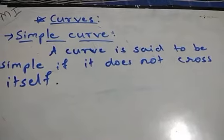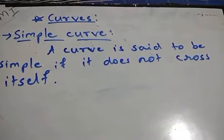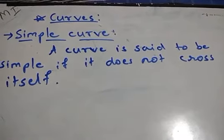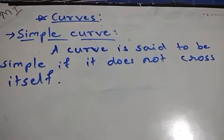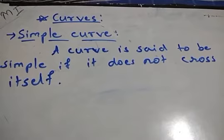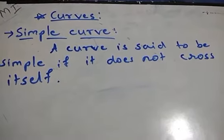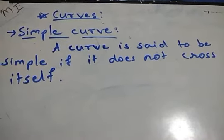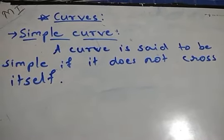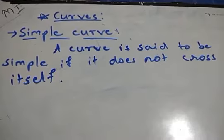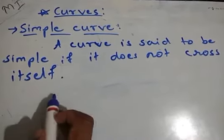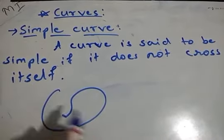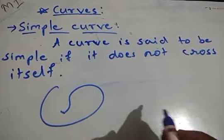Now let's study the next part, that is simple curve. These are the types of curves, and we are going to discuss the first type: simple curve. A curve is said to be simple if it does not cross itself. We can see here curves which are not crossing themselves.